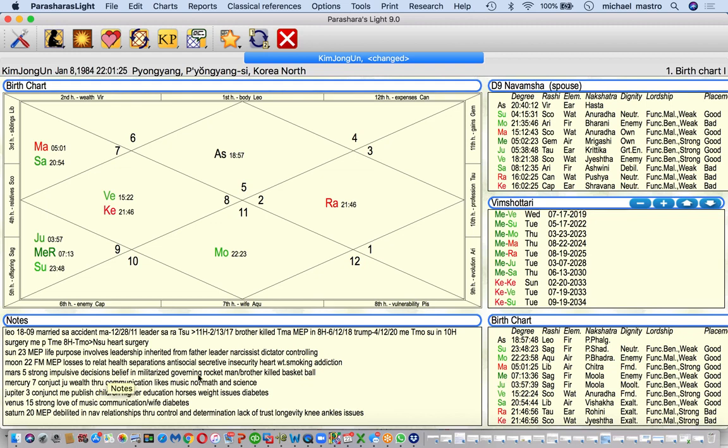And he believes in a very militaristic type governing agenda called the rocket man. Mars represents brother in this chart, and he killed his brother because his brother was not supportive. Didn't trust his brother. Really into basketball, competitive sports. Loves Dennis Rodman.